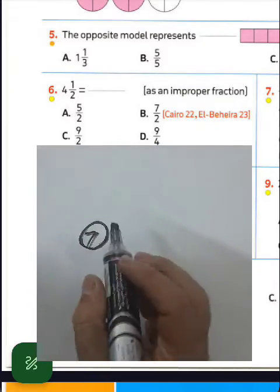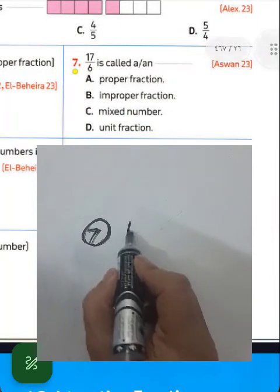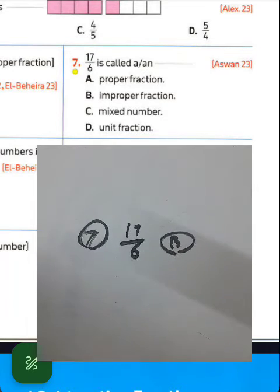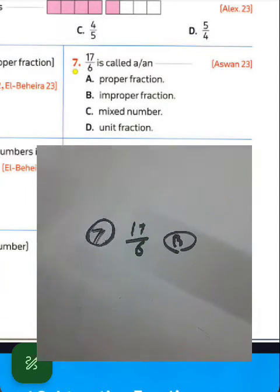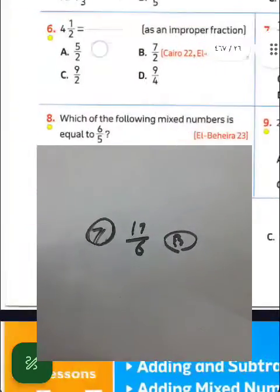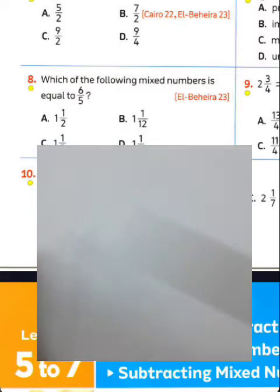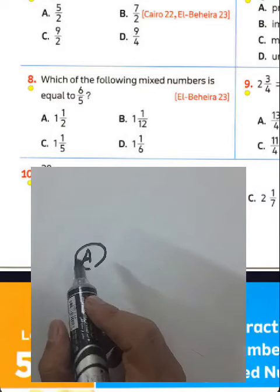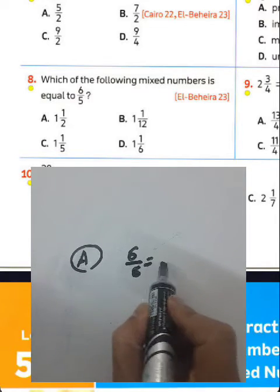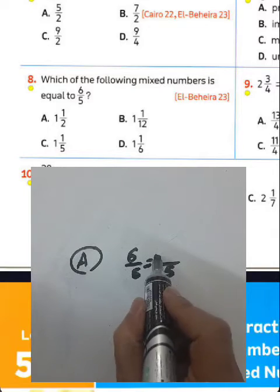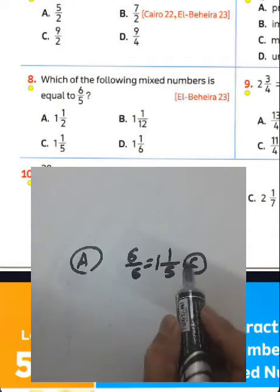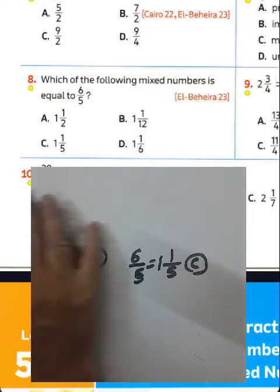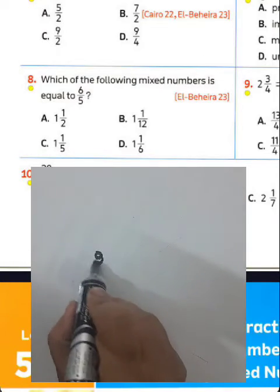Question number seven: 17 over 6 is called an improper fraction because the numerator is greater than the denominator. Choose letter B. Question number eight: which of the following mixed numbers equals 6 over 5? Convert 6 over 5: 6 divided by 5 equals 1 with remainder 1, so the result is 1 and 1 over 5. You must choose letter C.